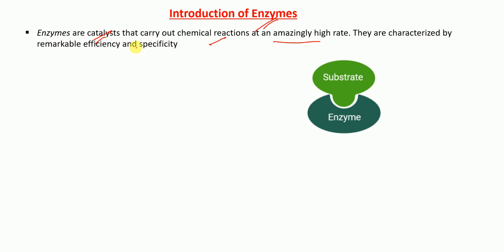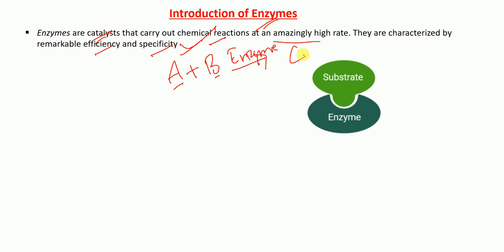Enzymes are characterized by remarkable efficiency and specificity. For example, substrate A and substrate B are two molecules. Enzymes catalyze the biochemical reaction between them and give the product C. This means the enzyme will speed up the reaction between A and B to give the product C, hence functioning as a catalyst.